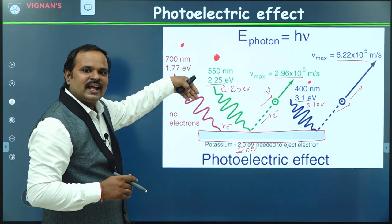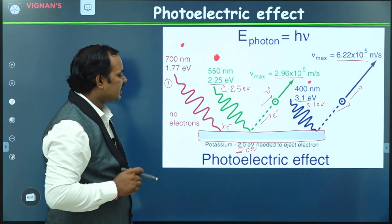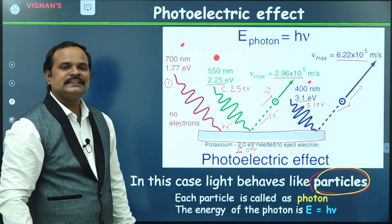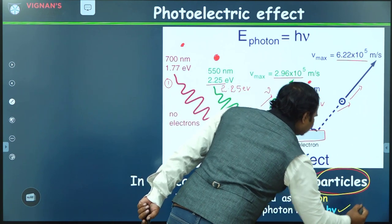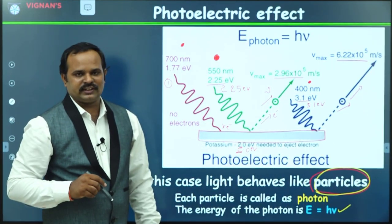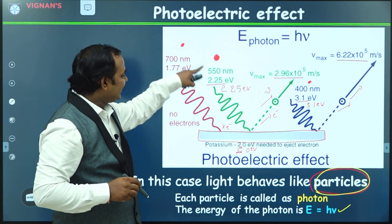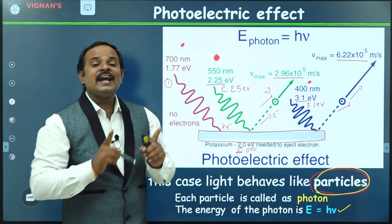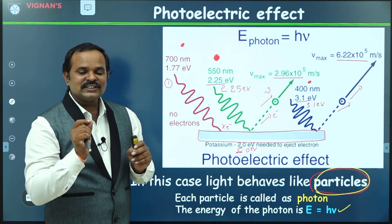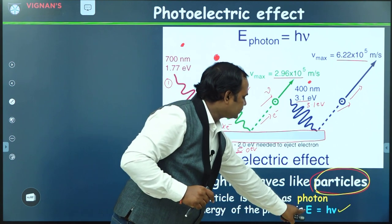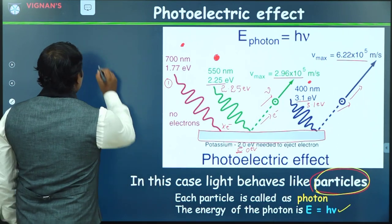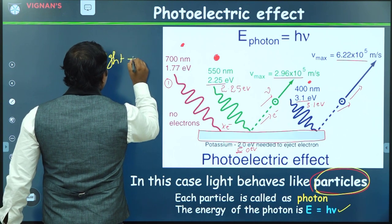Here we are considering the incident light is in the form of particles. Those particles are called photons. Each photon has energy equal to hν, where h is Planck's constant and ν is the frequency of the light or electromagnetic radiation. This effect is successfully explained by considering light is in the form of particles, where each particle carries a fixed energy. The relation between energy and frequency is given by E = hν.